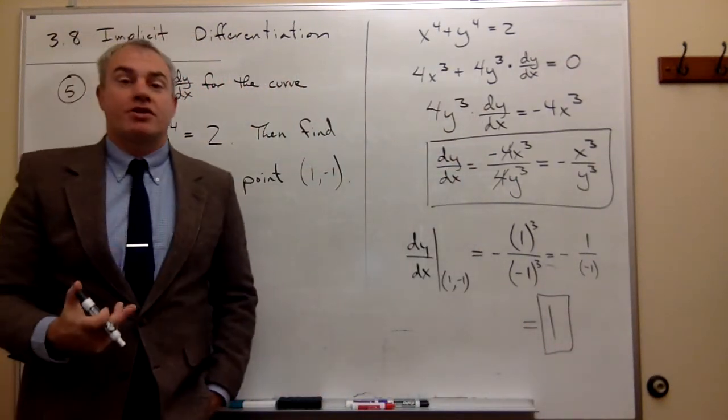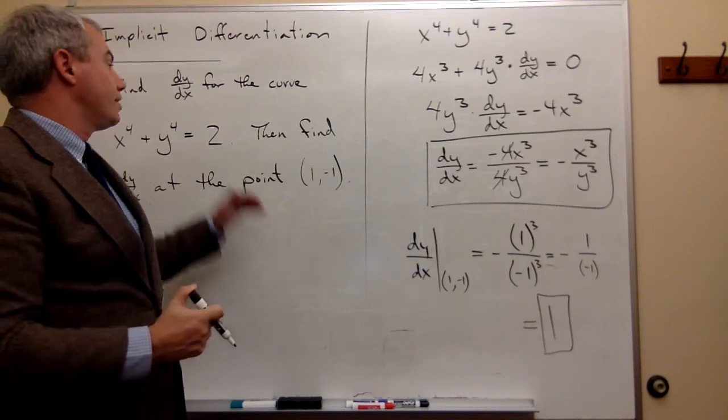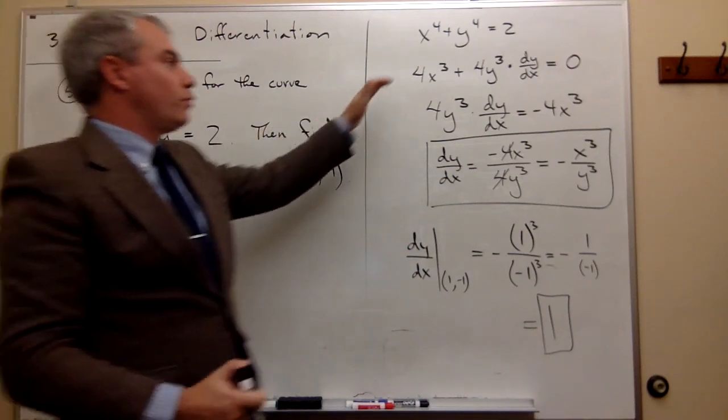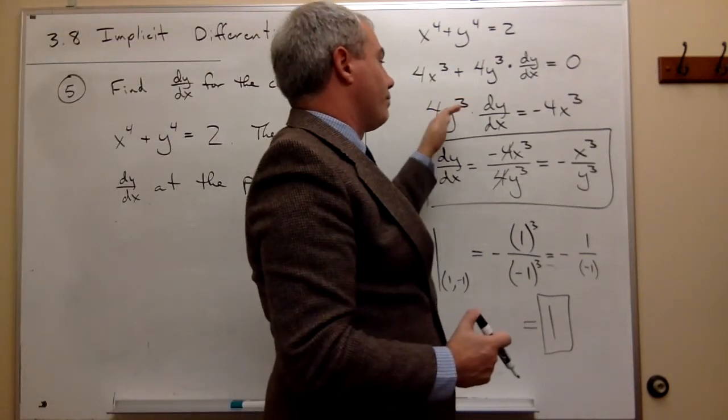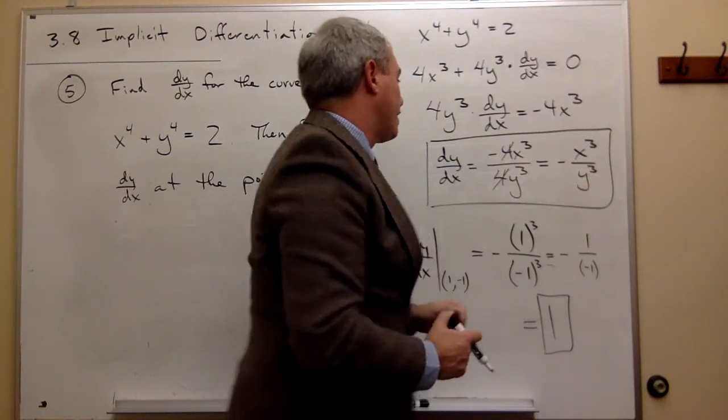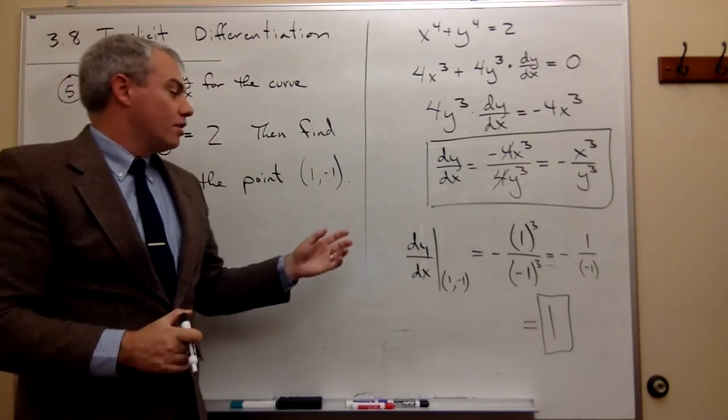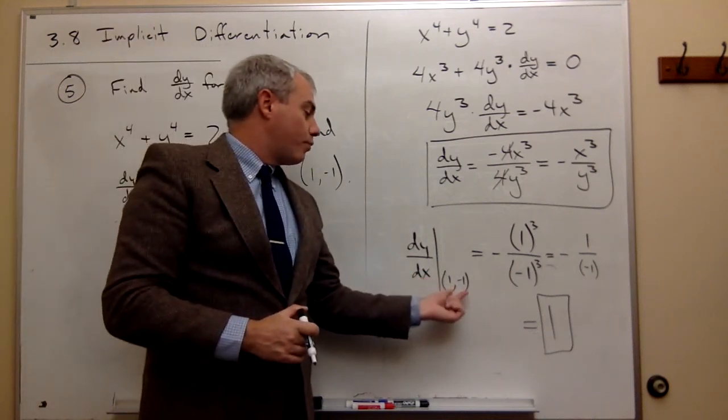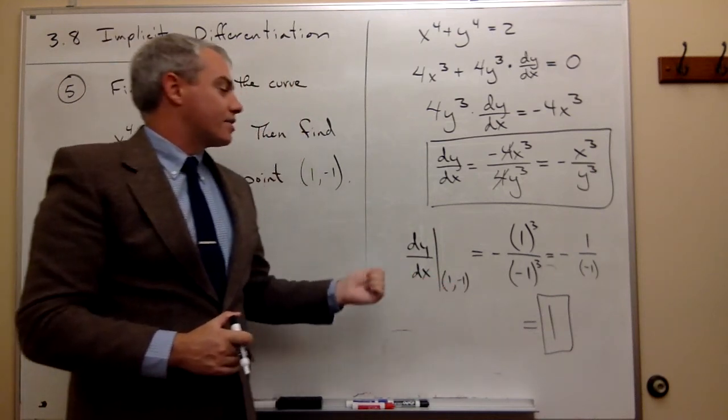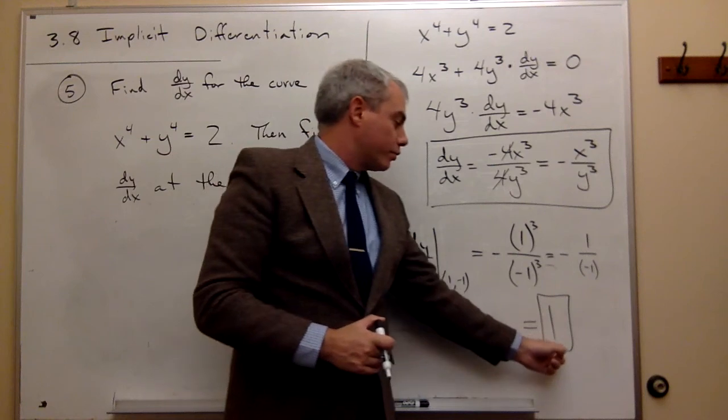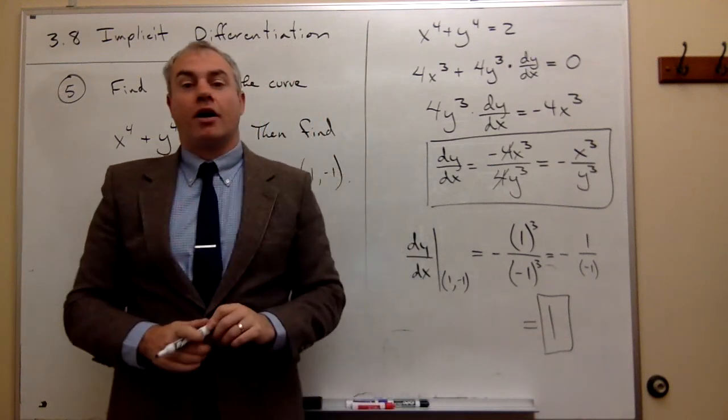So there are two parts of this problem. First, we wanted to find dy/dx. We took the derivative implicitly and we're able to find dy/dx. And then the second part of this problem is plug in the point (1, -1) for x and y and get an actual slope at that point of one.